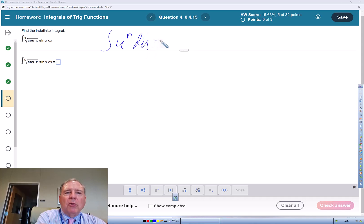u to the n du equals u to the n, the integral of u to the n du is u to the n plus 1 power divided by n plus 1, the new exponent, plus c.